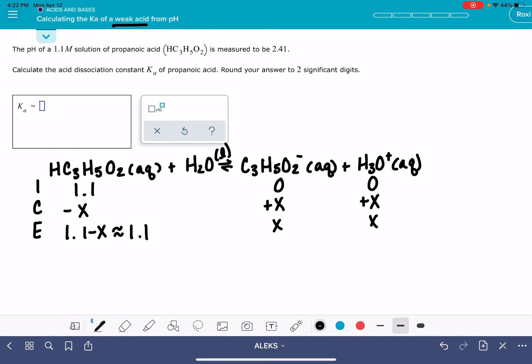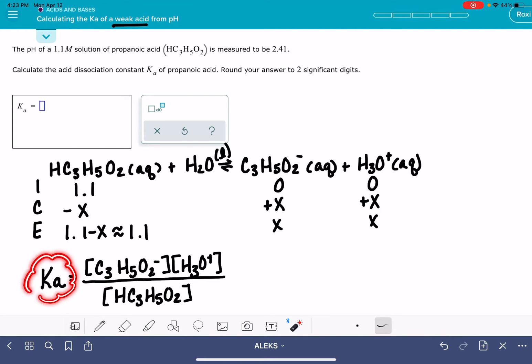Now, our goal is to figure out the value of Ka. Ka comes from the equilibrium expression, which we get by taking the products and dividing that by the reactant, everything raised to their own stoichiometric coefficients: C3H5O2- times H3O+. Remember, we're leaving out the water in this equilibrium expression because we always leave out pure liquids, over HC3H5O2. Our goal is to calculate the value of Ka.